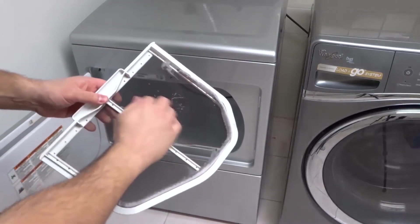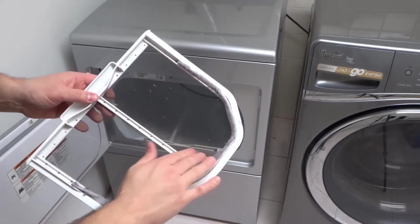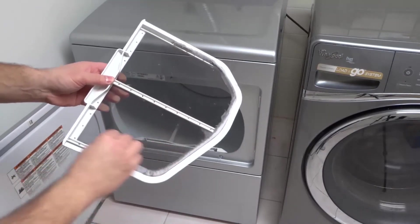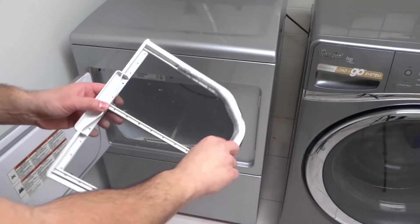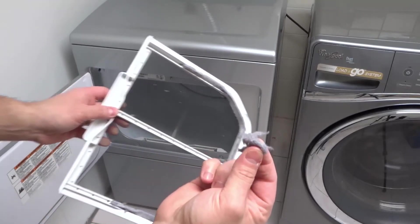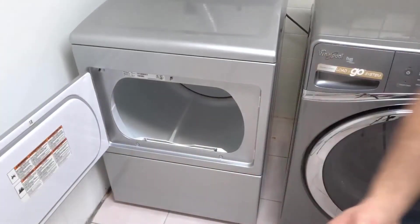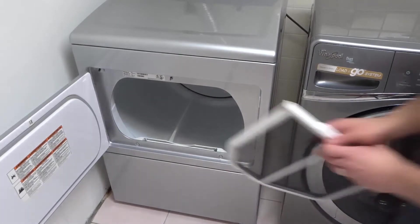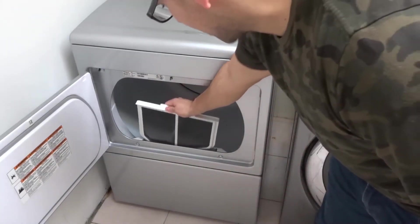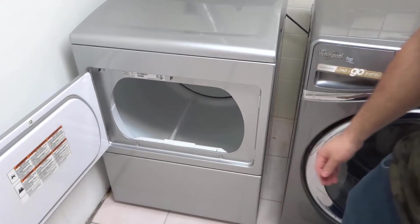So take your lint filter out, empty it, so just get all the lint with your hand like that. There's not that much on this one, but I always empty it before every single session. So I'm just going to bring this over here, throw it in the trash can, place your lint trap back in the dryer in the correct orientation, just like that.